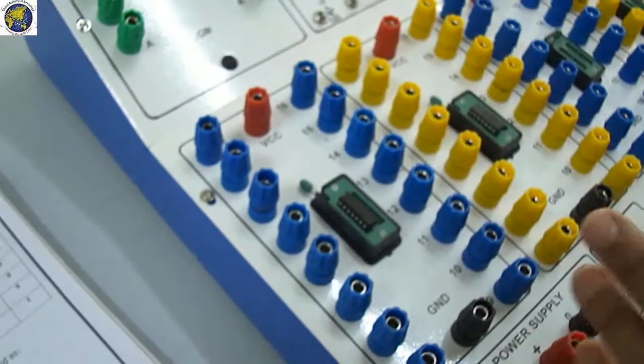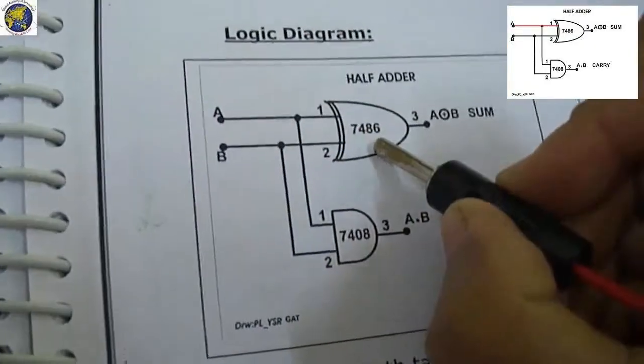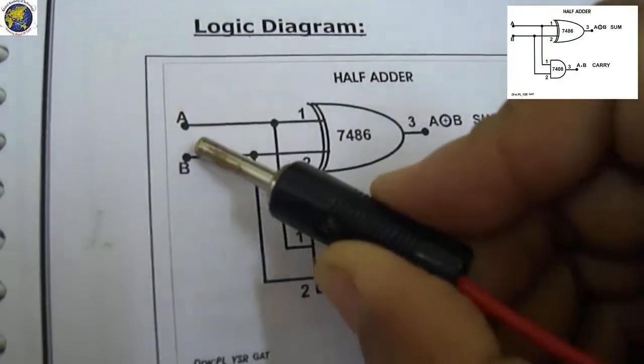Now pin number 1 of the 7486 is connected to A. So pin number 1 to A, first input A.